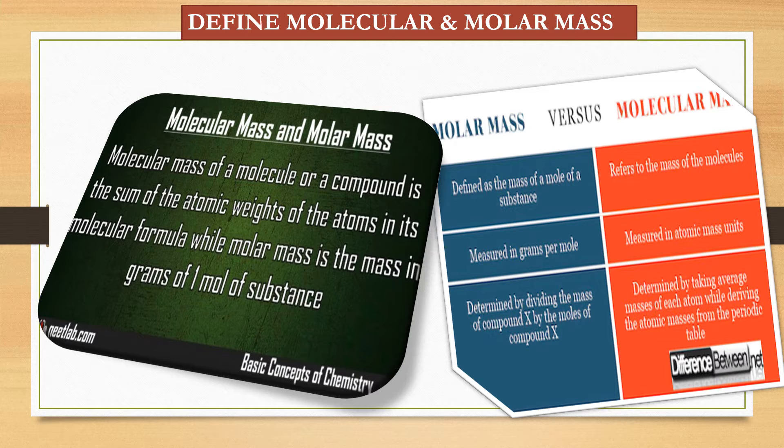Now, what are molecular mass and molar mass? Molecular mass of a molecule or a compound is the sum of the atomic weights of the atoms in its molecular formula. While molar mass is the mass in grams of 1 mole of substance. I am giving you one example. Suppose, carbon dioxide is a molecule. So, molecular mass of carbon dioxide is equal to atomic weight of carbon plus atomic weight of oxygen. That means, atomic weight or molecular weight of carbon plus molecular weight of oxygen also you can say. Because two atoms are there. And, molar mass when you will calculate, this is equal to, as for carbon dioxide only I am saying, molar mass in grams of 1 mole of carbon dioxide or 1 molecule of carbon dioxide.